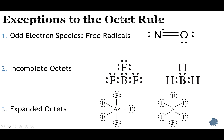Two more rules before we look at the structures. Rule number one: third energy level or higher. Rule number two: the only element that will have an expanded octet, for our purposes, is going to be the central atom. We would not find expanded octets on any of the surrounding fluorines — only the element right in the middle, that central element.